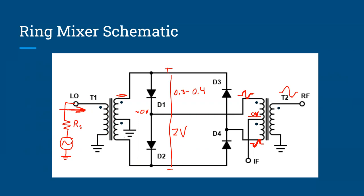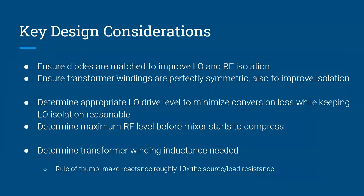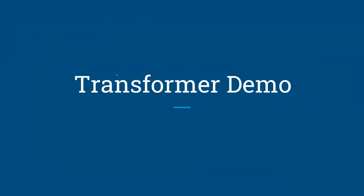For the transformer inductance, you want to make sure you're not loading down the source due to a voltage divider effect between the source resistance RS and the inductor. A good rule: make the winding reactance ωL roughly 10 times larger than RS. So if RS is 50 ohms, you want ωL to be roughly 500 ohms or higher at your operating frequency.